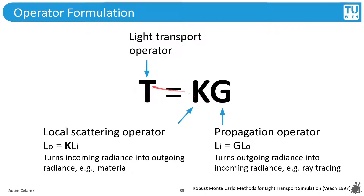The light transport operator K consists of a local scattering operator and a propagation operator. The scattering operator gives outgoing light as scattering times incoming light, accommodating material properties. The propagation operator turns outgoing radiance into incoming radiance — responsible for all ray tracing. Compared to the recursive formulation, these operators are in reverse. The problem can be viewed from two directions, and adjoint versions of both formulations can be defined.